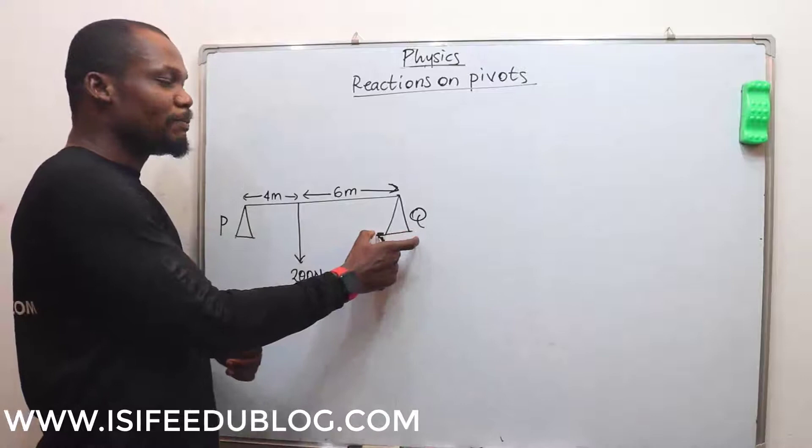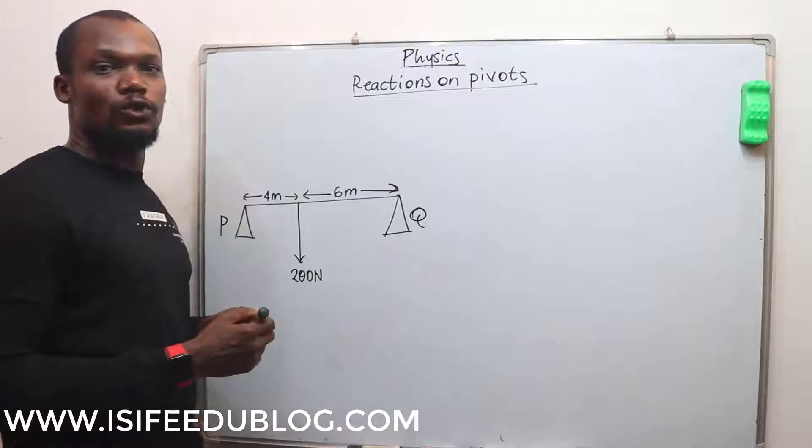This 200 newton force has to be shared among the two pivots. How are we going to get these reactions?